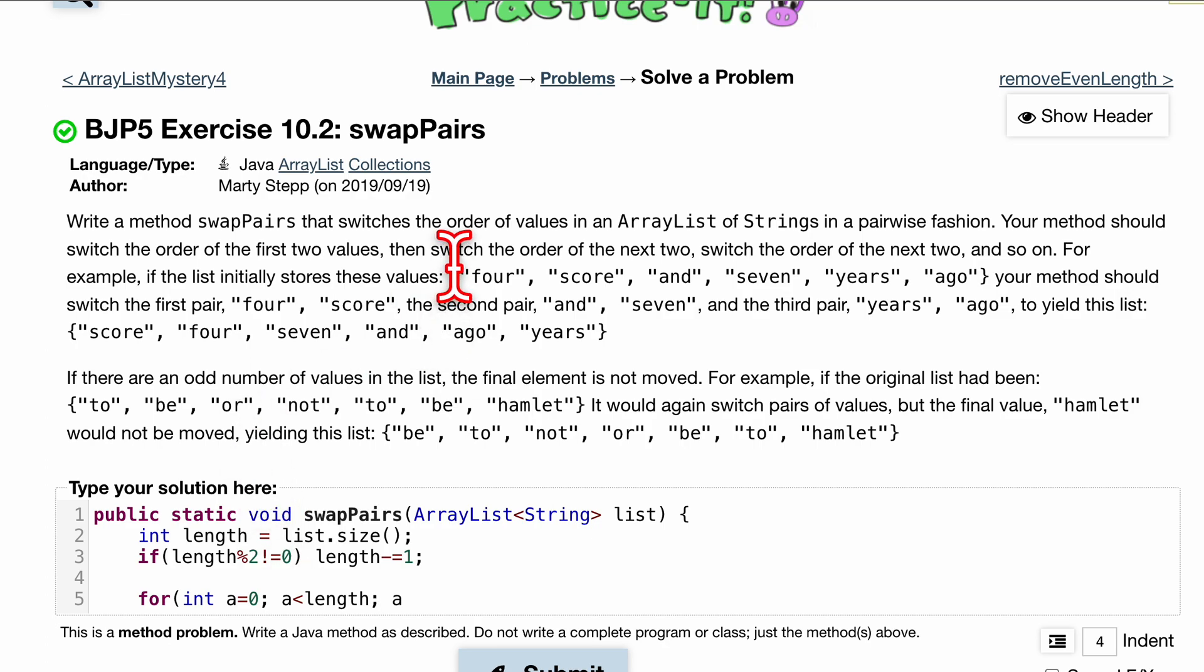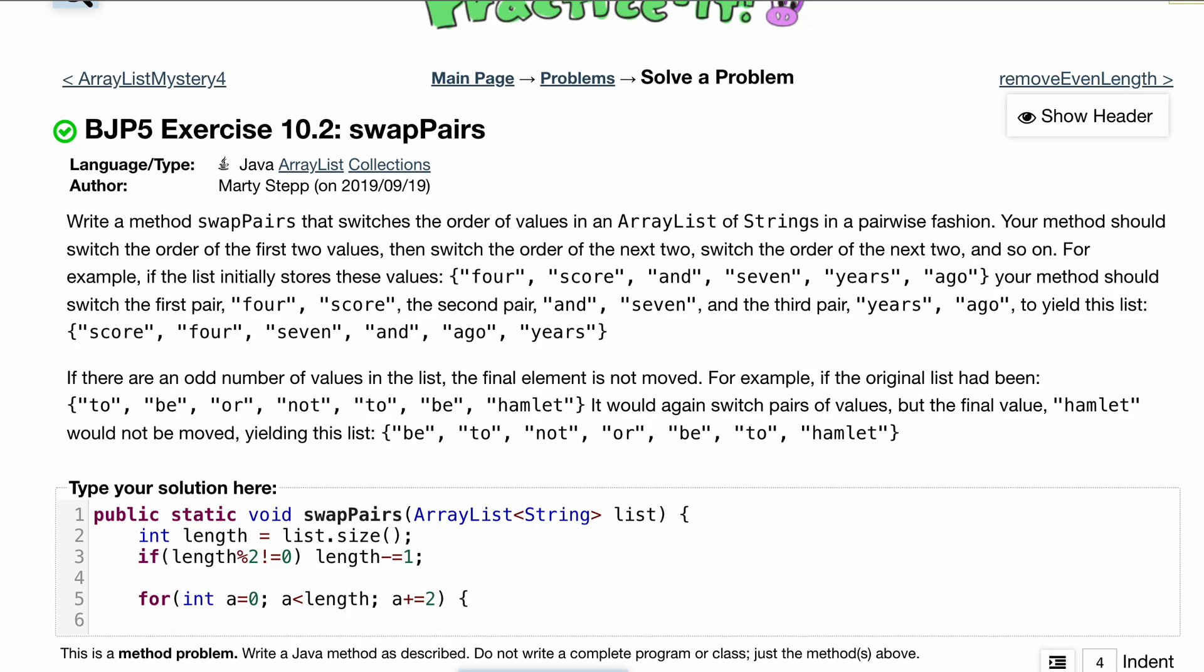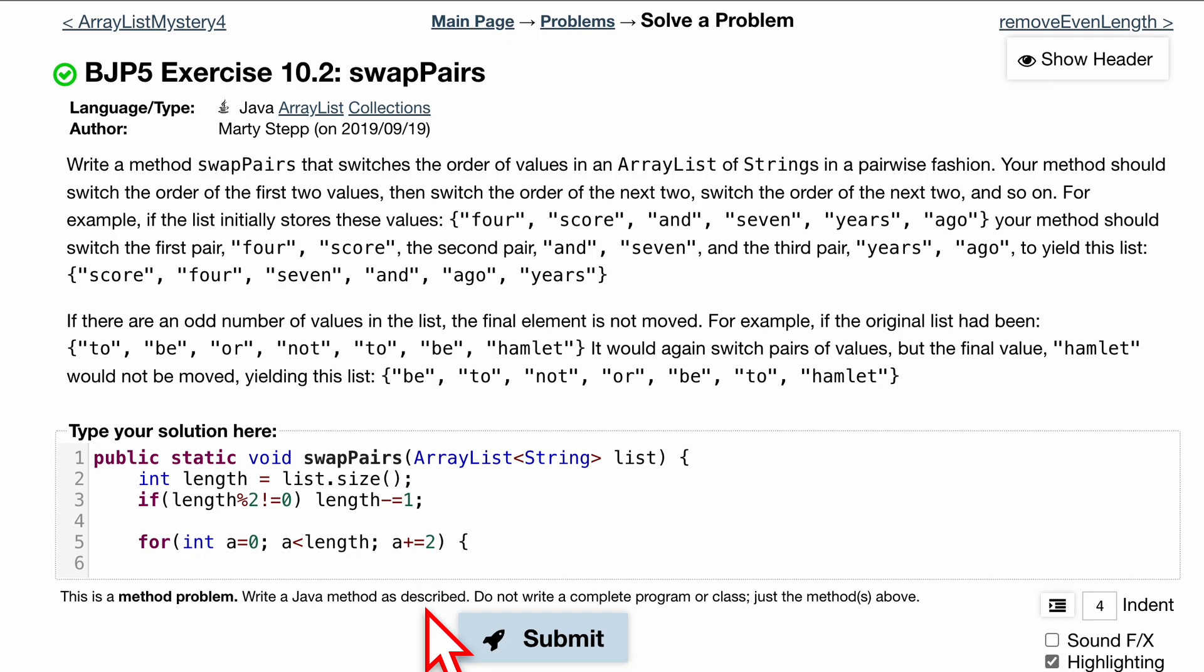But since we're dealing with a swap of two values in here, we are going to do a plus equals 2, so we can increment by 2 every single time. That's going to be our header for the for loop.